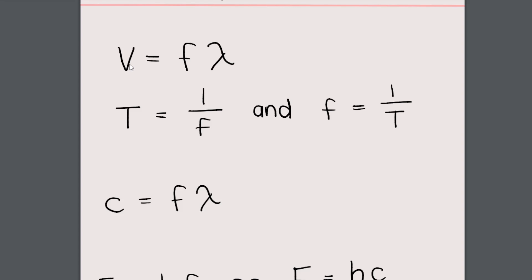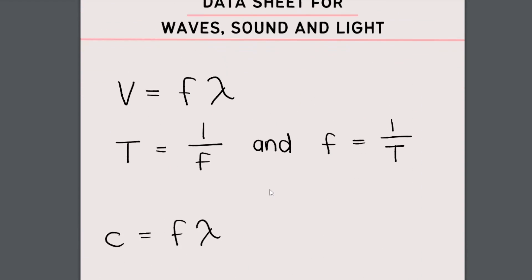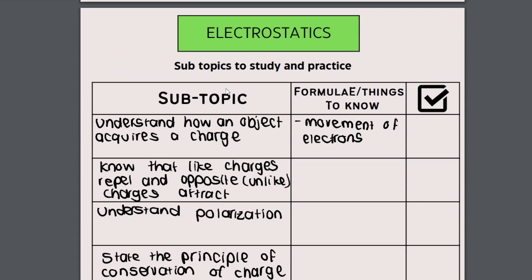Then we've got electrostatics, which is our second big topic after waves. The data sheet is there to help you — if you print it and stick it in your book, you can add notes to it. I have the data sheet for wave, sound and light, and the data sheet for electrostatics. When you write a physics or chemistry exam, you'll be given a data sheet with most of your formulae listed under each topic heading.